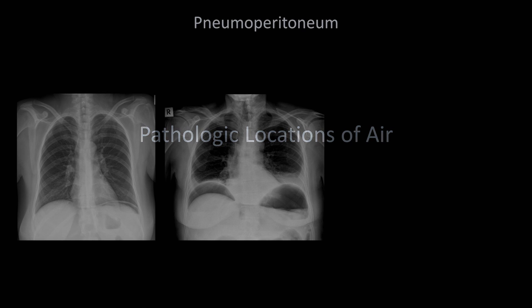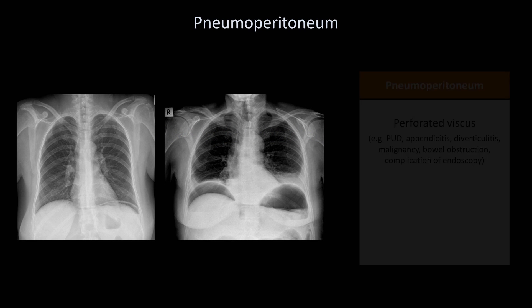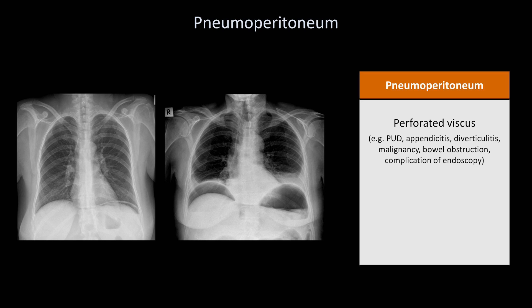Finally, I'm going to go through all of the remaining pathologic places that air can accumulate. First up is pneumoperitoneum, often referred to as free air under the diaphragm. This can be from a perforated viscus, a consequence of recent abdominal surgery, trauma, or is a normal consequence of peritoneal dialysis.